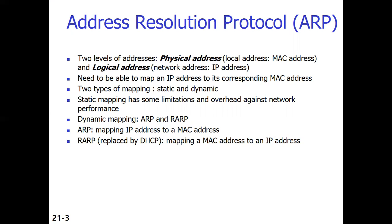Due to these limitations of static mapping, we make use of dynamic mapping. In dynamic mapping, each host maintains a dynamic table with continuous table updates done via a learning mechanism, for which a protocol is needed. The two protocols for dynamic mapping are the Address Resolution Protocol, ARP, which maps IP address to MAC address, and the Reverse Address Resolution Protocol, RARP, which maps MAC address to IP address — both are the reverse of each other.